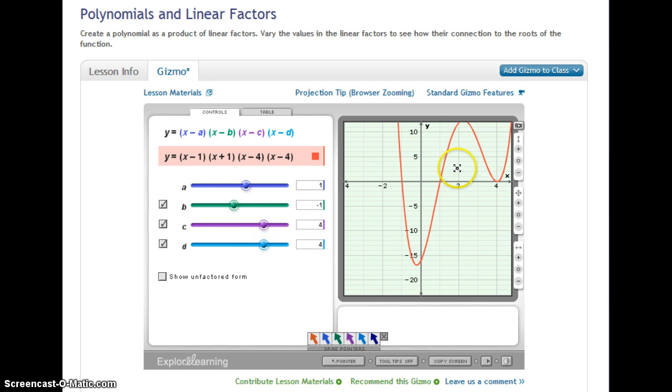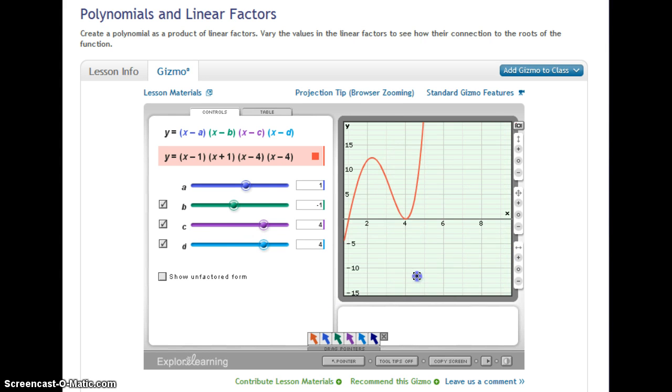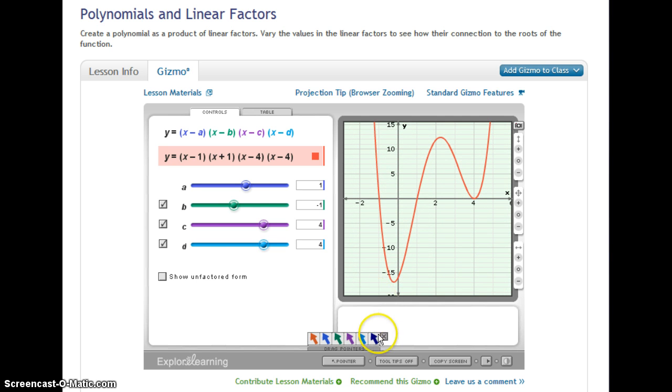You can't quite see this whole graph. I can drag this down a little. That seems to work well. So we can see on the graph that we do have a zero at x equals 4, a zero at x equals positive 1, a zero at x equals negative 1.